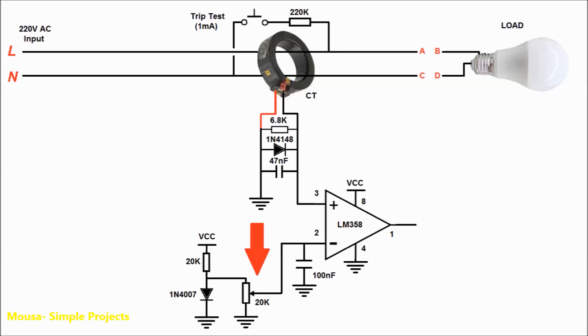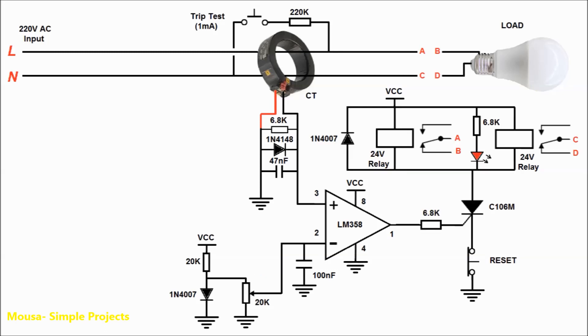Part number three includes an SCR and two relays. When somebody gets shocked, the op-amp switches on the SCR, and the relays switch off the load. I'm using two relays to disconnect the live and neutral wires at the same time to increase safety. To reset the circuit, you have to disconnect the ground from the cathode pin of the SCR for a second using this normally closed switch.